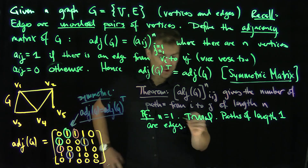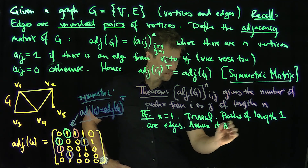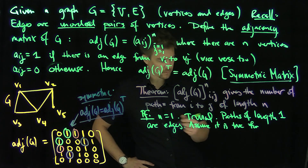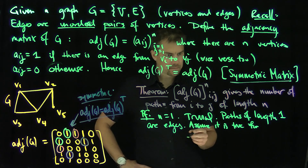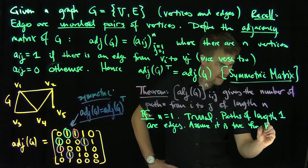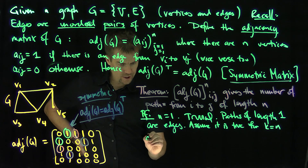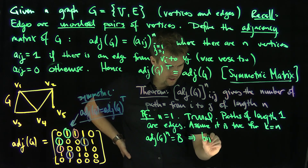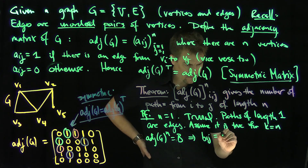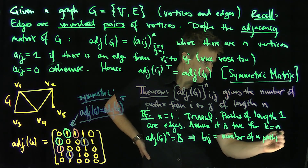If I assume it's true for n equal to k, and then let's call the adjacency matrix of G to the power n as B. Then by assumption, B_{i,j} — the entries of B — is the number of n-paths from i to j.